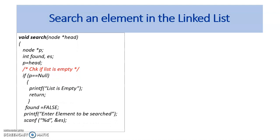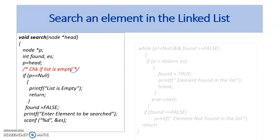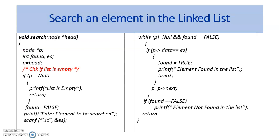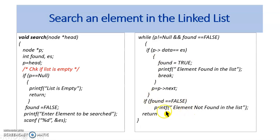Now let us see the code to perform the search operation in the linked list through the function search. The head pointer is passed as an argument. Initially, make the temporary pointer p point to the head. First, check if the list is empty — if so, print the list is empty. Else, set the variable found as false. Get the element to be searched from the user. Compare the data element of each node with the element to be searched. If matching is not done, move to the next node by setting p equal to p.next. This continues until the element is found or the end of the list is reached. If the data element matches, set found to true and print the element found; else print the element not found in the list. Thus, the given element is searched in the list.